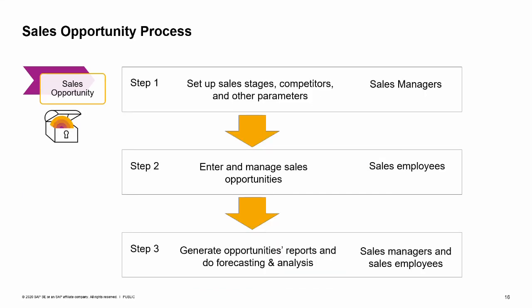Let us take a look at the sales opportunity process. You can use sales opportunities to record, track, and analyze every step in your business potentials with a customer or prospect. Step 1: Sales managers set up important information such as which stages a sale will pass through and the likelihood by percentage of closing the sale. This information will help in forecasting sales. The key to successful setup is to decide what you wish to monitor during the sales process.